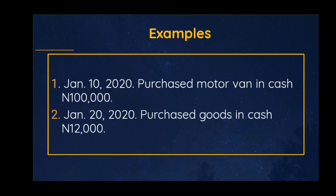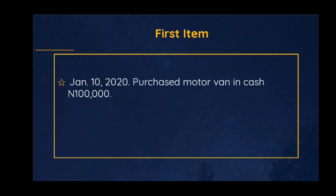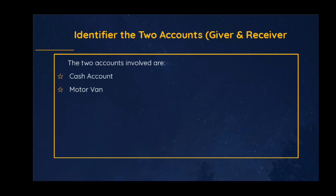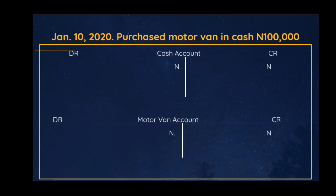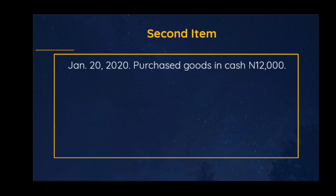Let's take an example. January 10, 2020: purchased motor van in cash, 100,000 naira. The first thing we do is identify the two accounts involved — we have the motor van account and the cash account. Since cash is going out, we credit the cash account with 100,000 naira, and the corresponding debit entry goes to the motor van account, so we debit motor van account with 100,000 naira.